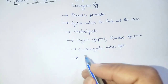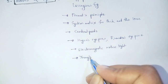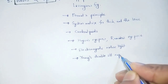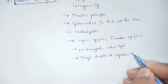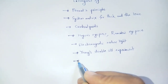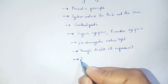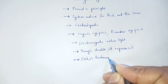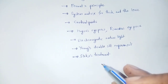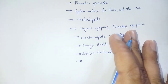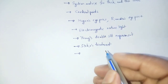Then we start with Interference. Interference begins with Young's double slit experiment. Young's double slit experiment covers fringe width and interference pattern. Next is Stokes treatment — Stokes treatment covers reflection at a denser medium and phase change. Then interference in thin parallel films and wedge-shaped films.